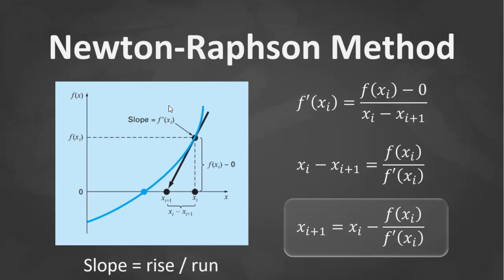So that is the basis of Newton-Raphson. The tangent — where is the tangent? The tangent is the first derivative at this point. So the derivative, it's rise over run.